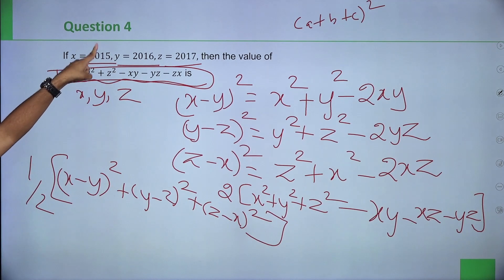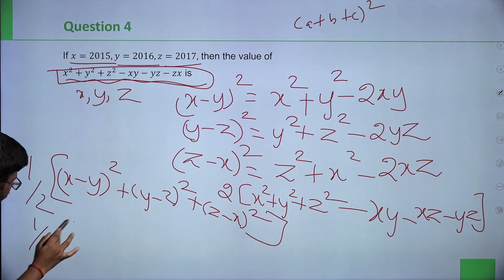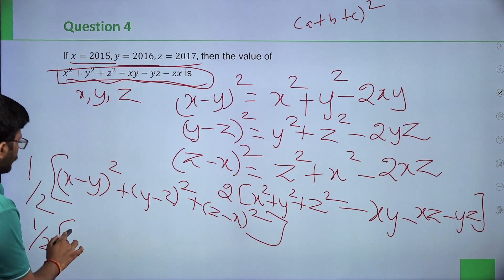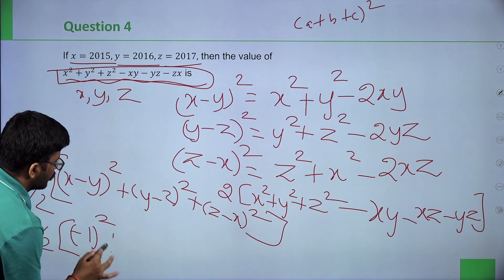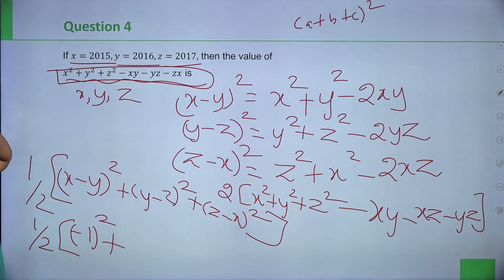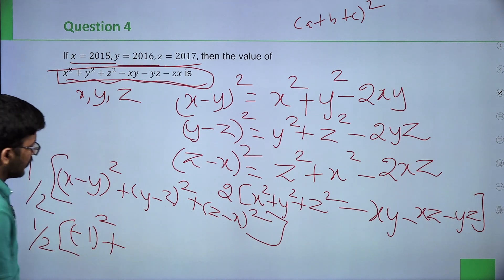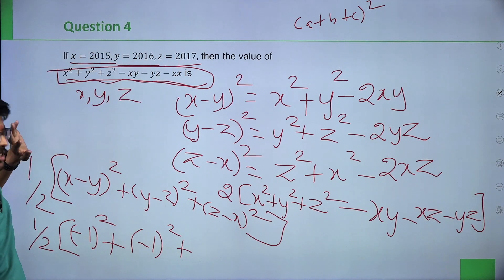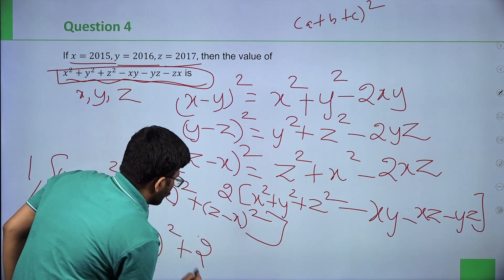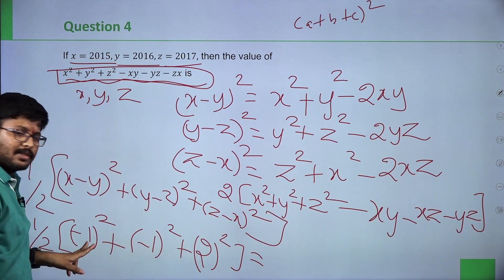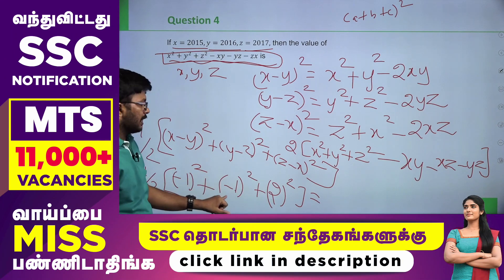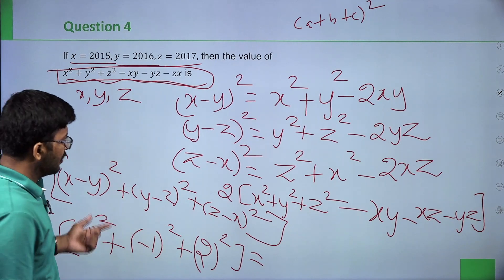Now substituting x=2015, y=2016, z=2017: one half into (x minus y whole square plus y minus z whole square plus z minus x whole square). x minus y = 2015 minus 2016 = minus 1, so minus 1 squared is 1. y minus z = 2016 minus 2017 = minus 1, so minus 1 squared is 1. z minus x = 2017 minus 2015 = 2, so 2 squared is 4. Therefore: half of (1 plus 1 plus 4) = half of 6 = 3. The answer is 3.